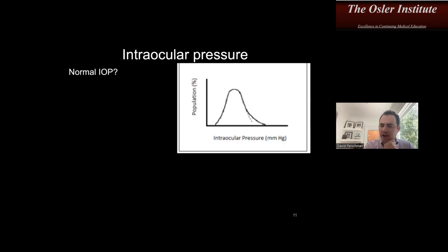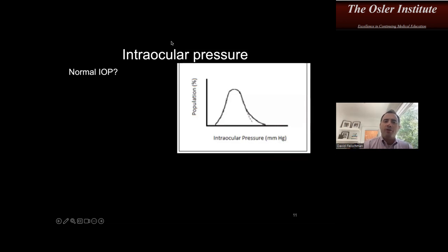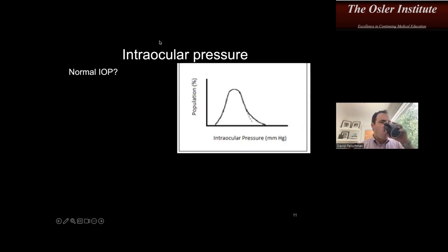I had another mnemonic for Axenfeld-Rieger syndrome using Axl Rose, but most people don't know who that is anymore — I'm getting out of touch. Moving on: what is the normal eye pressure? Your range is about 10 to 21 mmHg — good answer.